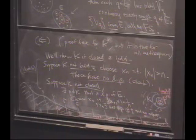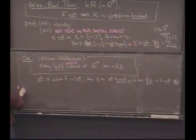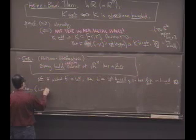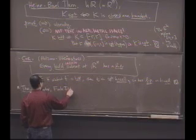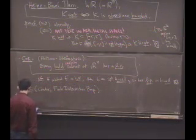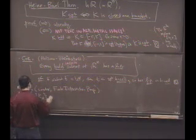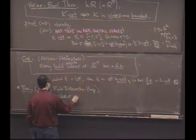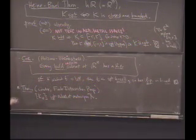Let me finish with another characterization of compactness. And this is a theorem due to Cantor, and it's sometimes you refer to as the finite intersection property. So suppose you have a bunch of sets, K alpha, and they're compact subsets of some metric space. Some arbitrary metric space X. It's a collection of compact subsets.